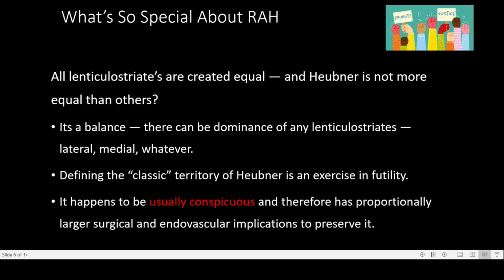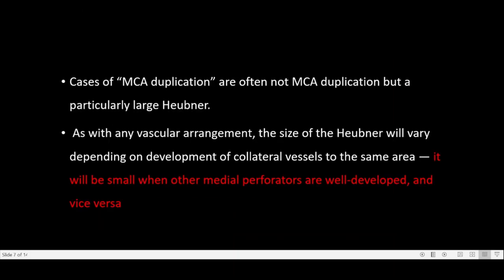It is usually very easy to identify in surgical and endovascular procedures, so the implications to preserve it are great. Most often, many of the larger Heubner's arteries are mistaken for cases of MCA duplication. As already mentioned, it is usually the largest among the medial lenticulostriate group, but it could even be small if other medial perforators are well developed.